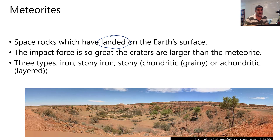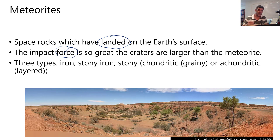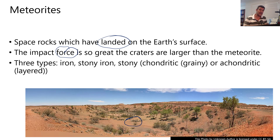One important thing about meteorites is that when they strike the Earth's surface, the impact force is so large that they often leave craters way bigger than the actual diameter of the meteorite. So a small meteorite can leave a considerably larger crater, due to the conversion of energy as the meteorite comes into contact with the Earth's surface.